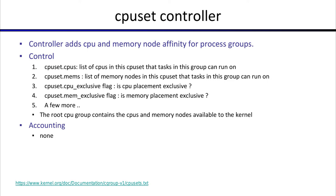The root CPU group contains the CPUs and memory nodes available to the kernel. To find out what you can set, just go to the top-level cpuset group and read those files to see the total number available to you.